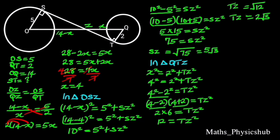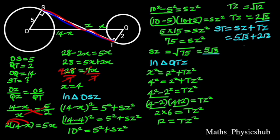From the diagram, ST equals SZ plus TZ. Since SZ equals 5√3 and TZ equals 2√3, hence ST equals 7√3.